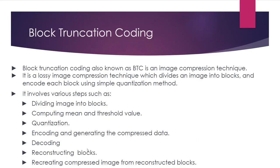Now we will be starting with block truncation coding. Block truncation coding, also known as BTC, is a lossy image compression technique which divides an image into blocks and encodes each block using a simple quantization method. First, we divide the image into several blocks, usually with sizes as powers of 2 such as 4×4, 8×8, or 16×16. For each block, we calculate the mean pixel value. Then we determine the threshold value, which divides pixels within the block into two sets — those greater than the threshold and those less than or equal to it. Generally, the mean value of the block is used as the threshold.